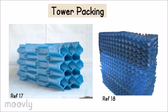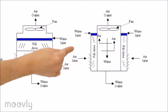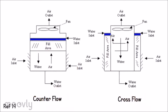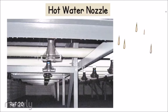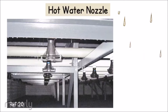Tower packing consists of plastic material and provides a large contact surface area between the hot water and air for a more efficient heat-removing process. The orientation of tower packing depends on the flow of fluid inside the cooling tower — counter-current or cross-flow fluid movement. Hot water nozzles aid in spraying the hot water onto the tower packing in the form of small droplets in order to achieve a bigger contact area with the incoming air.